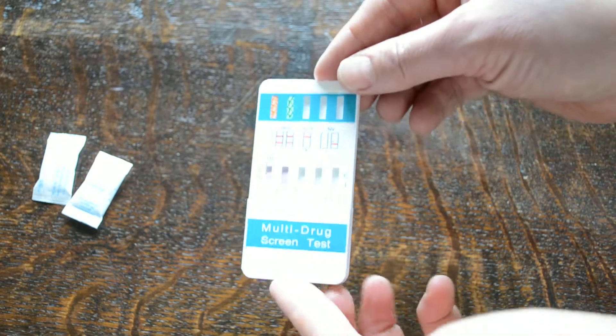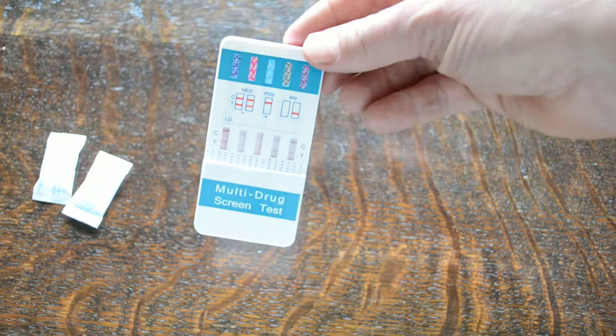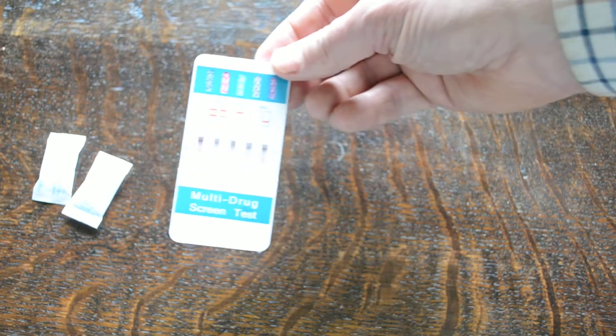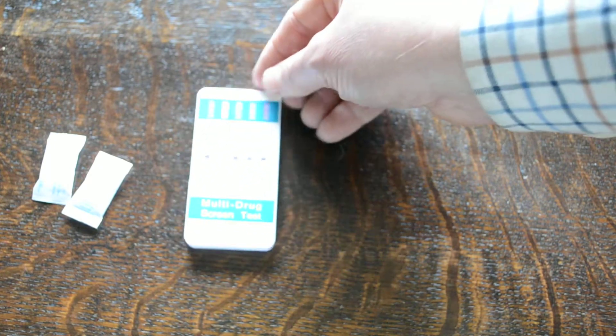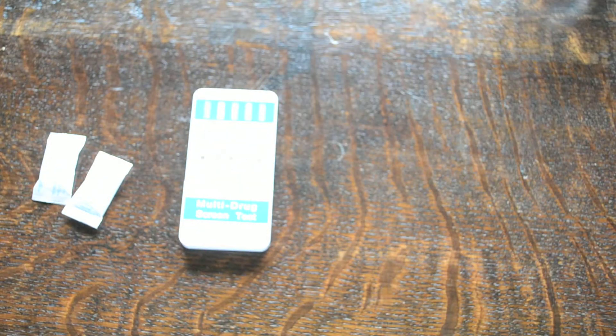So as soon as you see that clearly demonstrated, there's no need to wait for the full development time. You've got a clear negative test result on all seven parameters on this test membrane, so it can be discarded. Your results noted down for the sample and you can move on to the next test.